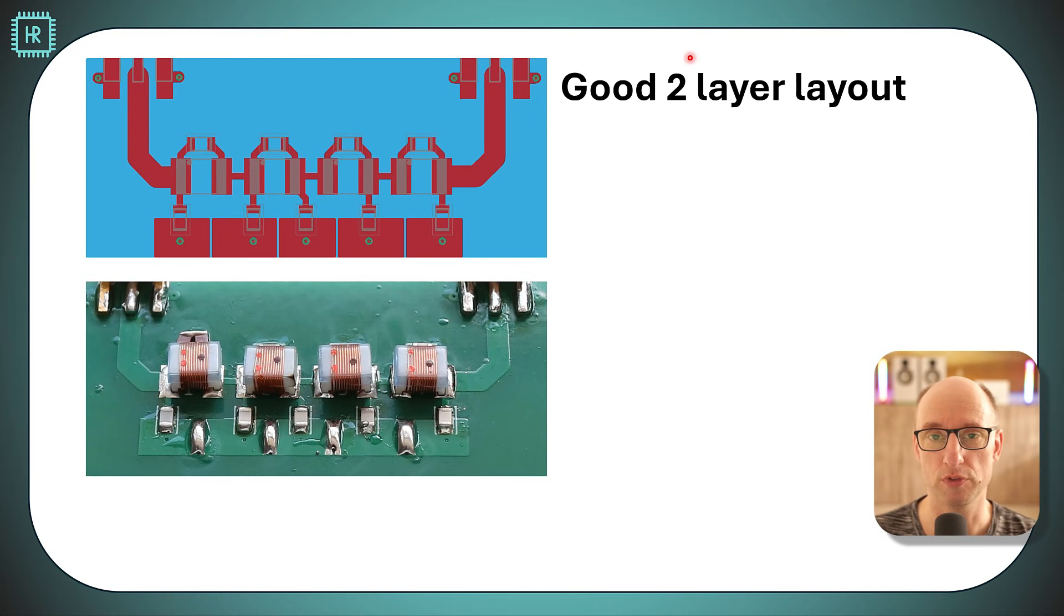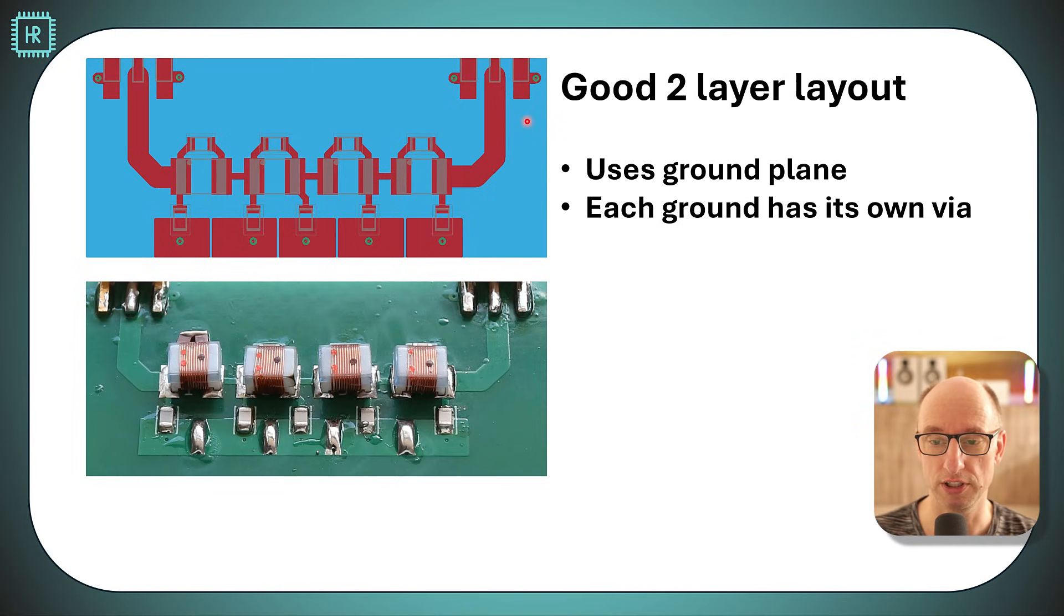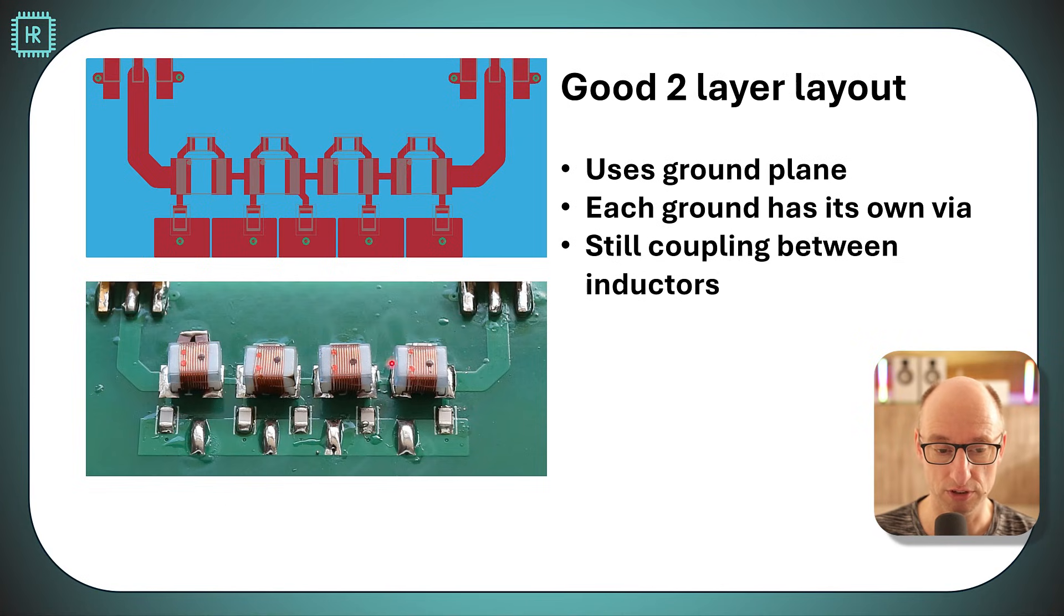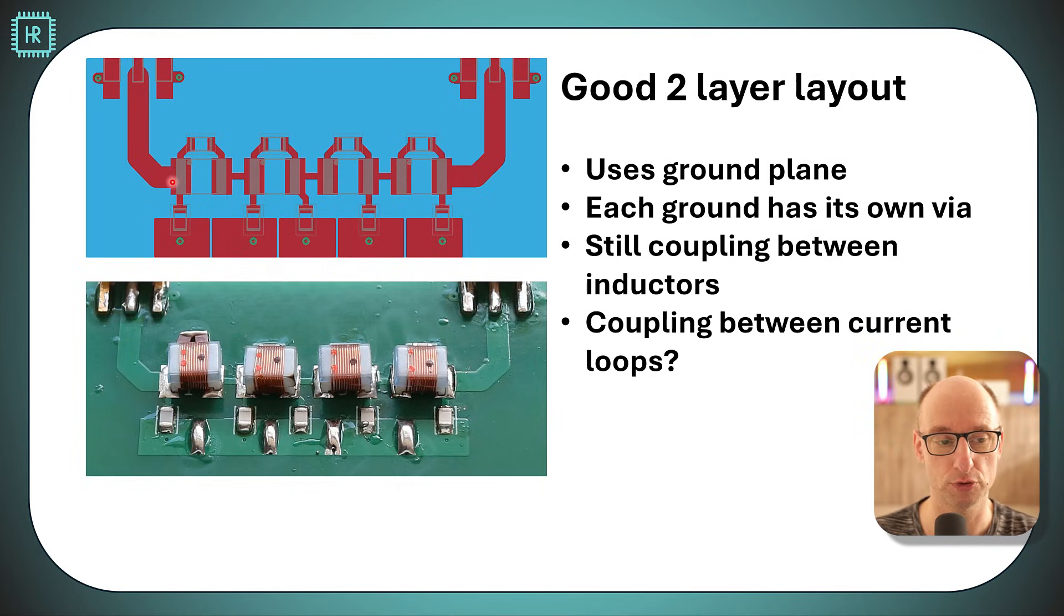So this is the next improved layout we're going to look at. It's still a two layer but now we're using a ground plane and each ground has its own VIA. As you can see here each ground connection has its own VIA. We still have coupling between the inductors as you can see here and something else I noticed is there seems to be coupling between current loops.